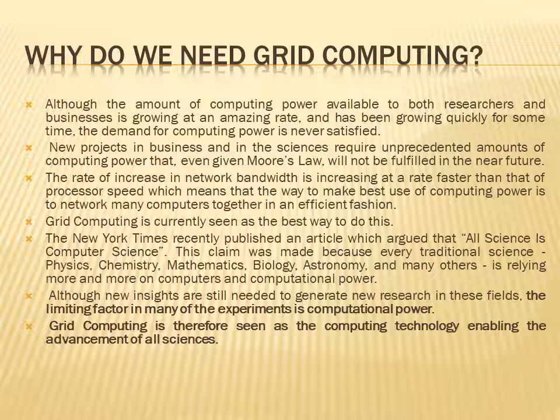The New York Times recently published an article which argues that all science is computer science. This claim is made because every traditional science — physics, chemistry, maths, biology, astronomy, etc. — relies more and more on computers and computational power. Although we need new insights to generate new research, the limiting factor in all experiments is computational power. So grid computing is therefore seen as a computing technology enabling the advancement of all sciences. This is the scope of grid computing.